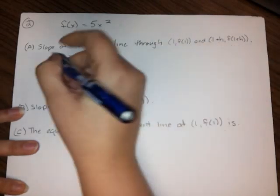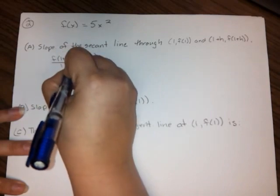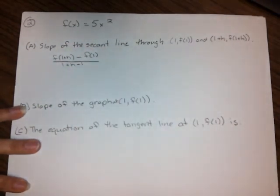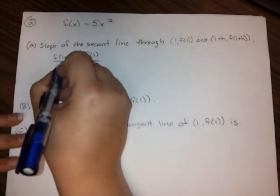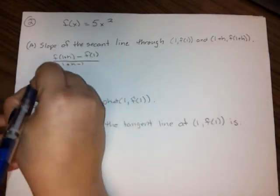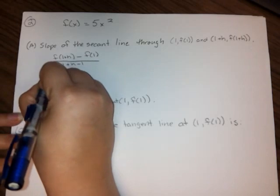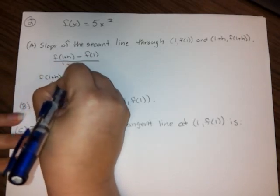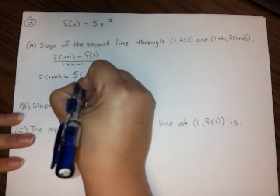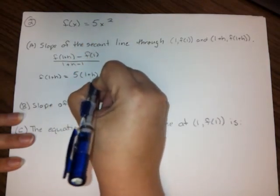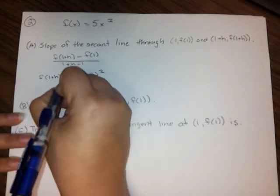So that's how we're going to find that secant line. What we need is we need to find what f of 1 plus h is. So f of 1 plus h, I'm just going to plug in 1 plus h into my original function. So that's going to be 5 times (1 plus h) squared.